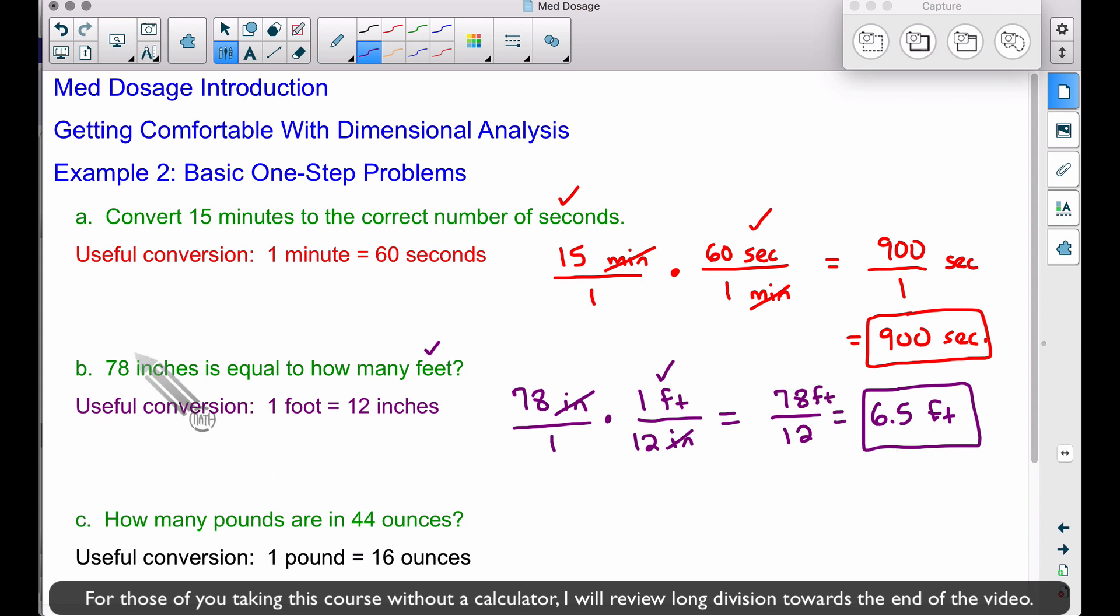Therefore, 78 inches is equal to 6.5 feet, or six and a half feet.